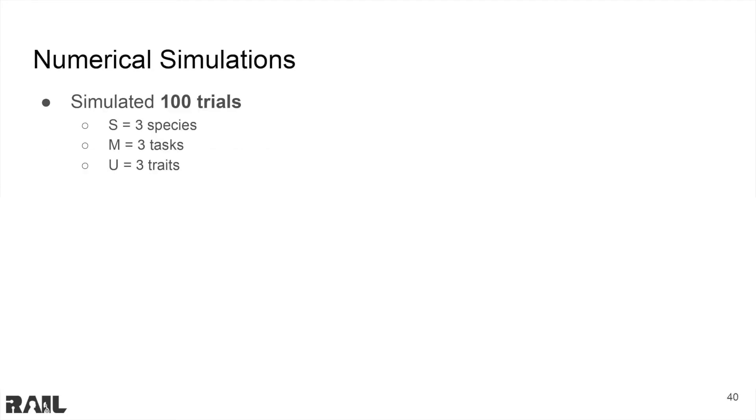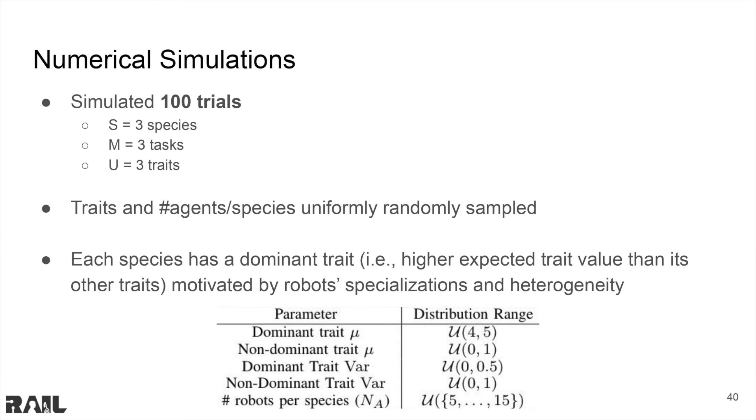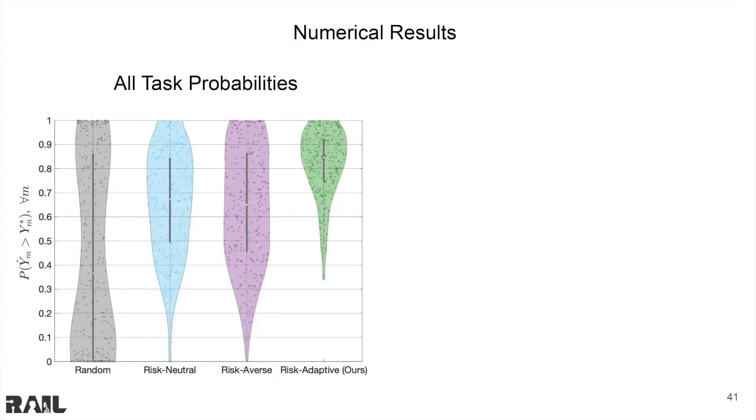For the first experiment, we generate 100 different coalition formation problems, each with different trait distribution parameters, number of agents per species, and task requirement. All of our problems have three species, three tasks, and three traits. Each species has a dominant trait for which it has a higher expected value than for its other traits. This is motivated by heterogeneity and robot specialization.